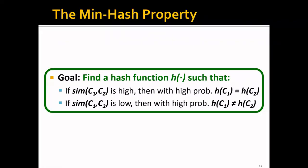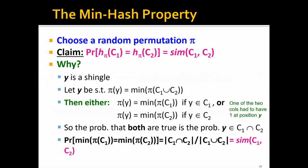So why would minhash work? Remember that our goal is to find a hash function H such that if the similarity of C1 and C2 is high, then with high probability we have that the hash value of C1 is equal to the hash value of C2. And if the similarity of C1 and C2 is low, then with high probability the hash value of C1 is not equal to the hash value of C2. This is basically equivalent to saying that if we choose a random permutation pi, then the probability that the hash value of C1 and C2 are identical is equal to the Jaccard similarity of C1 and C2.